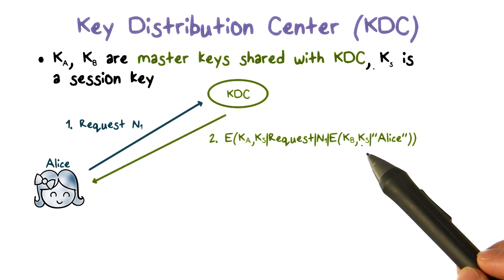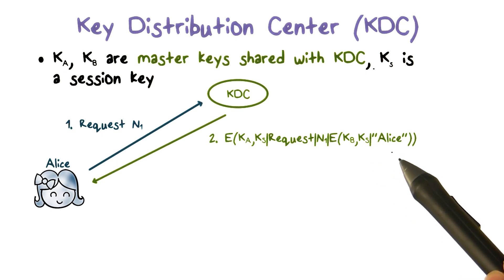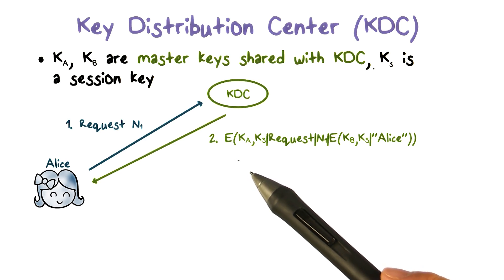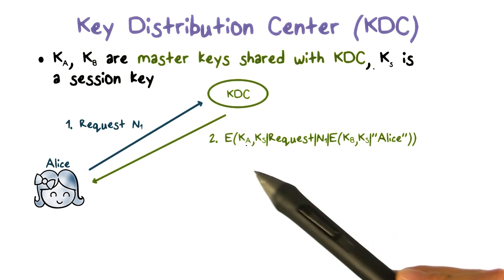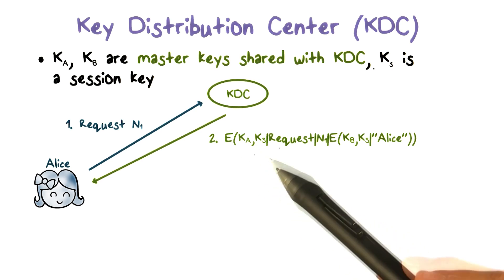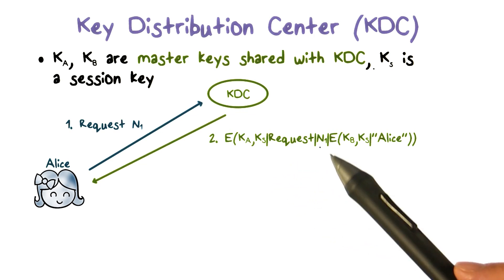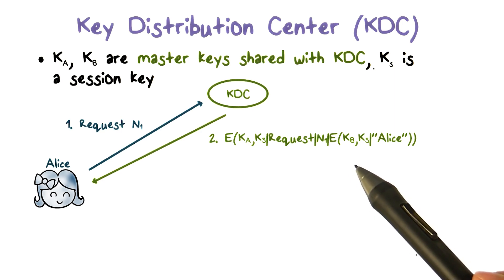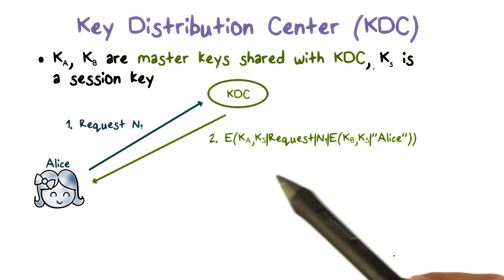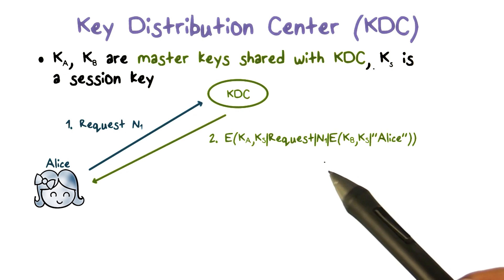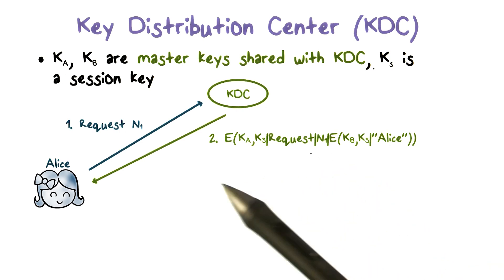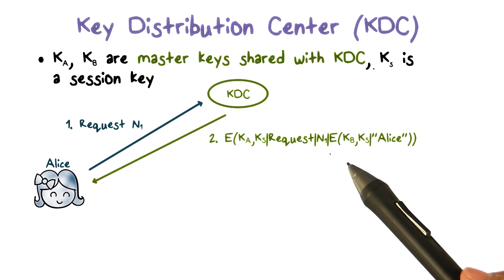When Alice gets back the message from the KDC, she can decrypt it because she has the master key KA. She can extract the session key KS, and she knows that the message is from the KDC and is fresh. It is not a replay because only the KDC can use KA to encrypt properly a message that contains the original request and nonce that she just sent.